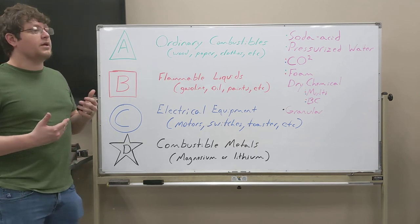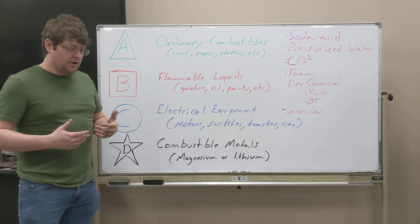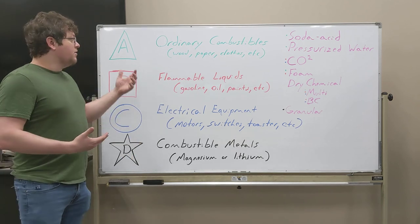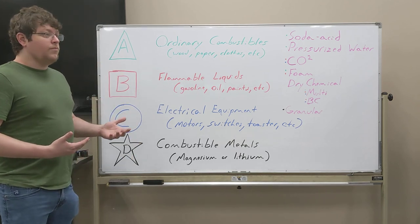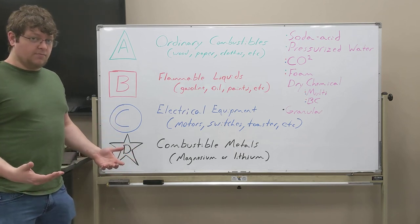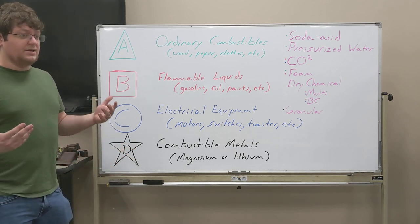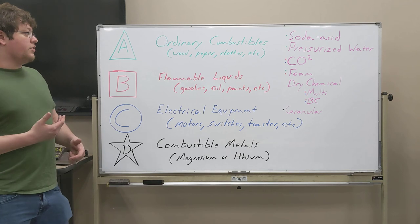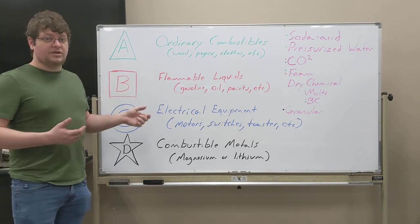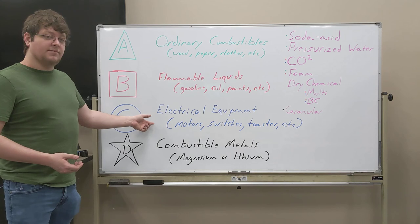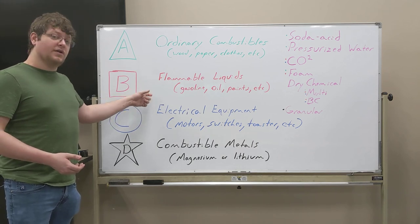So the first one is like soda acid. It's a type of type A fire extinguisher. Another one is pressurized water. So those are your two basic type A's. Another for type B is CO2. CO2 is also a type C. So you can see that they sometimes overlap.